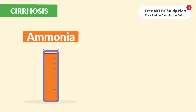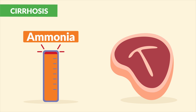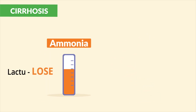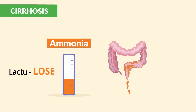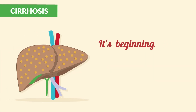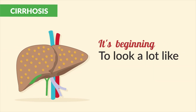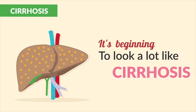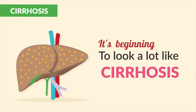Too much ammonia in the blood — byproduct of protein metabolism. Give lactulose to aid the excretion. It's beginning to look a lot like cirrhosis.